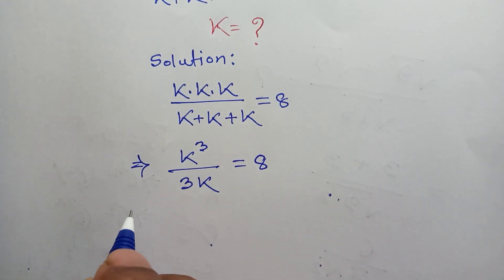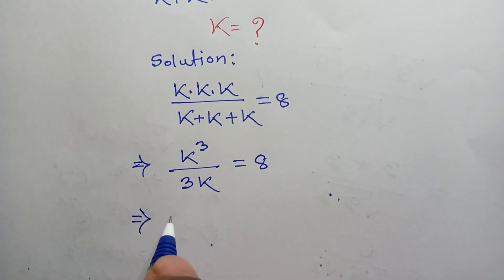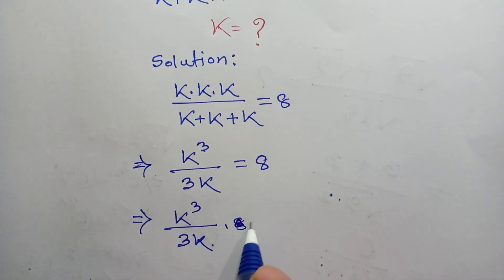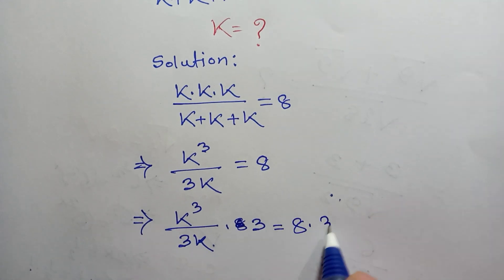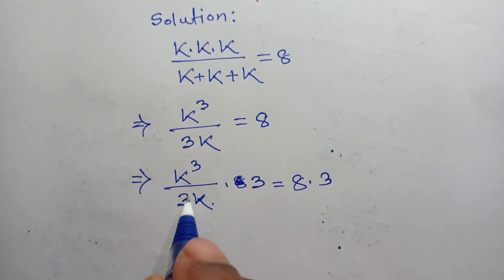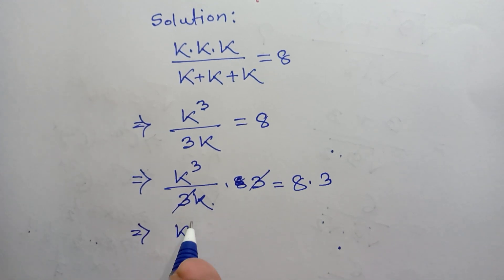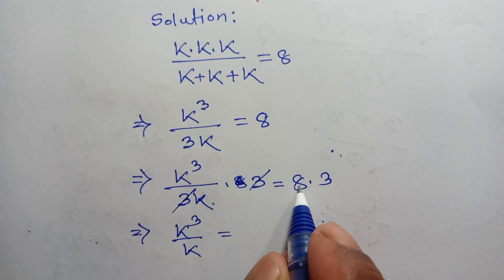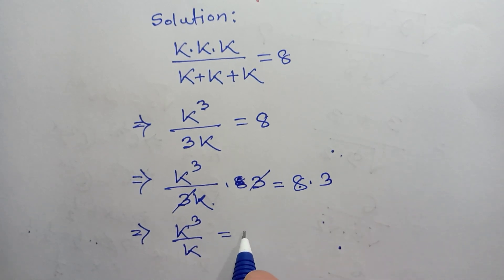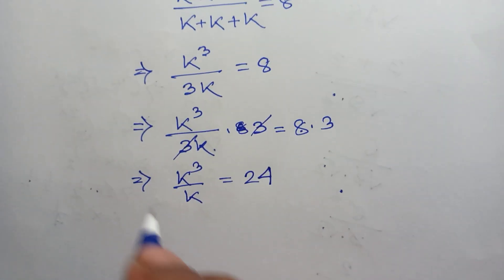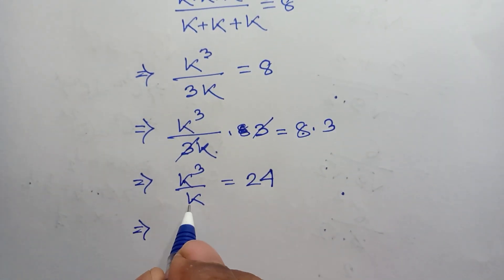Now we multiply both sides by 3: k cubed over 3k times 3 equals 8 times 3. The 3s cancel out, so we get k cubed over k equals 24.